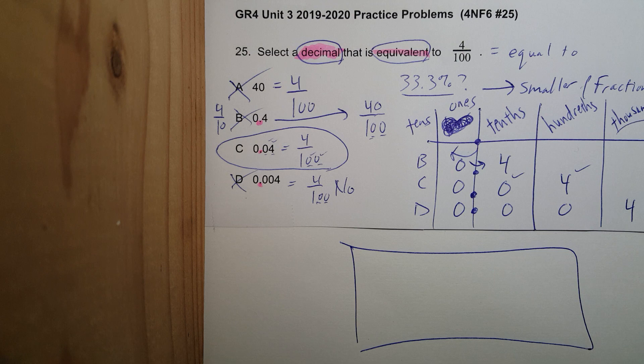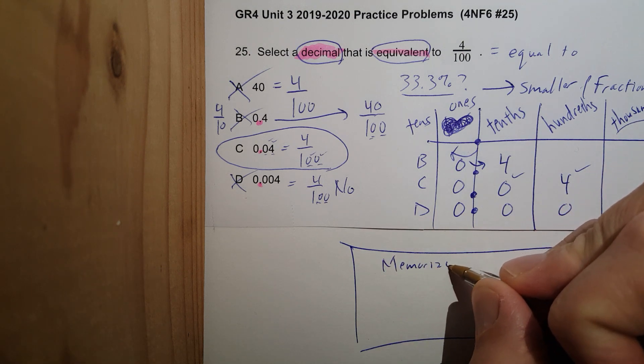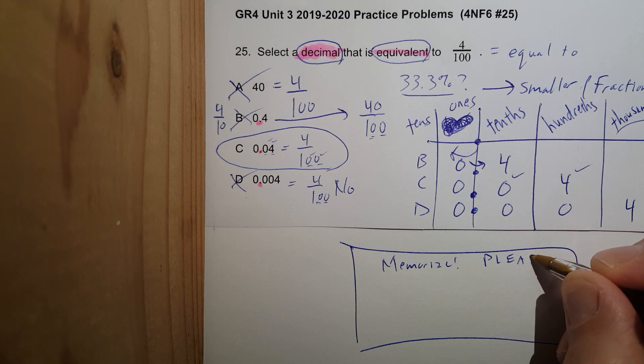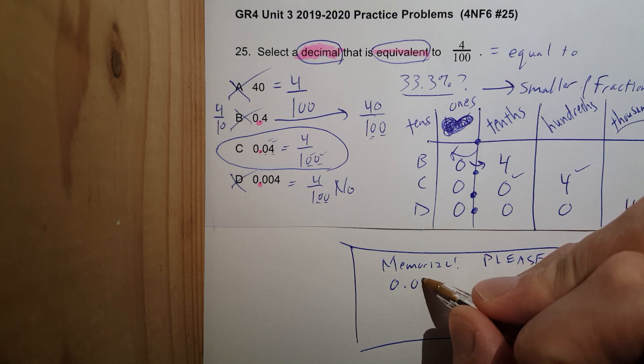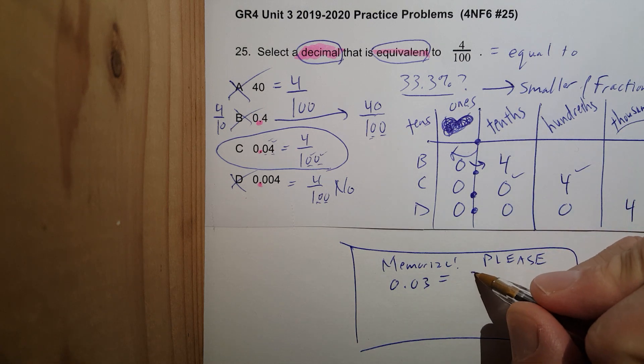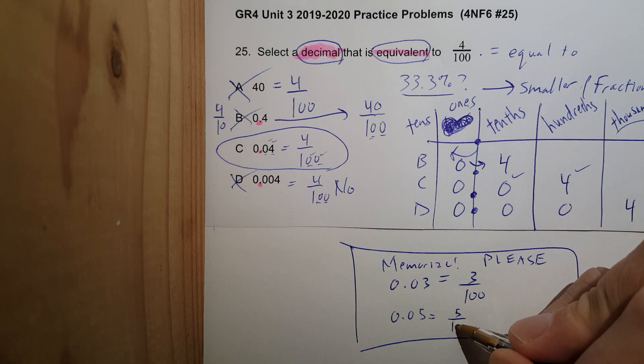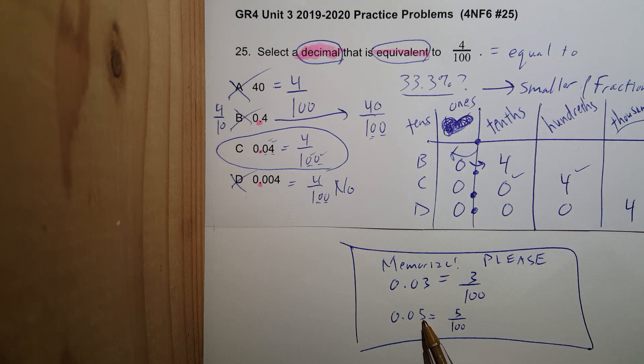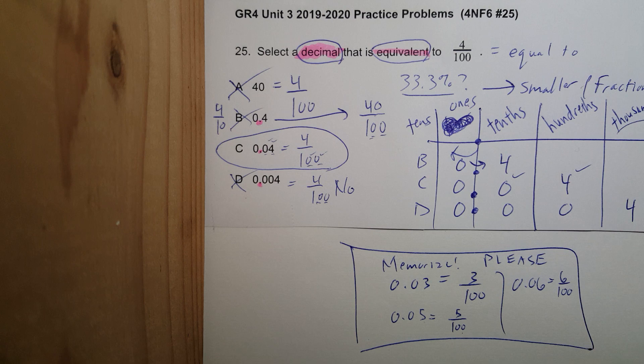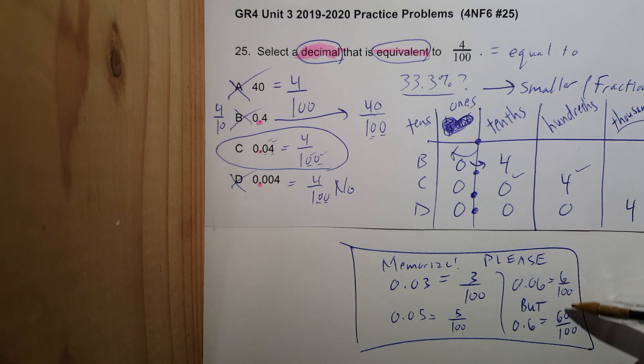So let's do a quick review. Just memorize this. Memorize, please. Zero point zero three equals three over a hundred. Zero point zero five equals five over a hundred. You have 5 pieces out of 100. 0.06 equals 6 out of 100. But 0.6 would equal 60 out of 100, and this will be more for later on Unit 4. Okay, but we are on Unit 3.